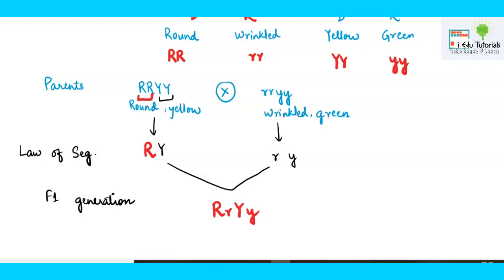The phenotype of the F1 generation is 100% round seeds because one dominant allele is present, and they will be yellow in color. All offspring produced in the F1 generation will be round in shape and yellow in seed color.